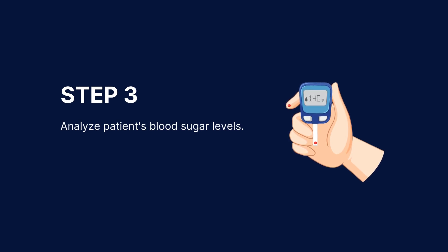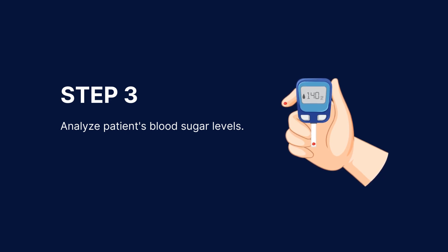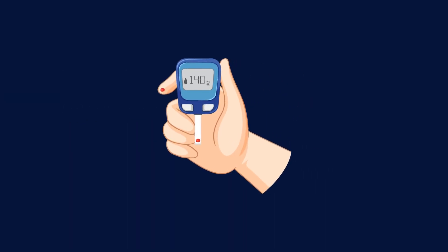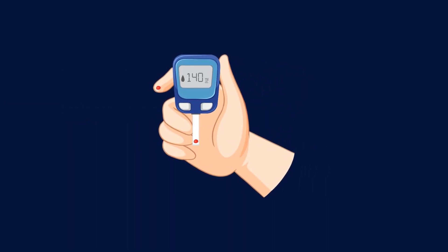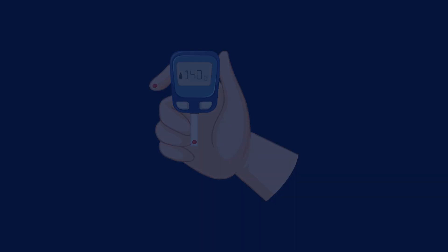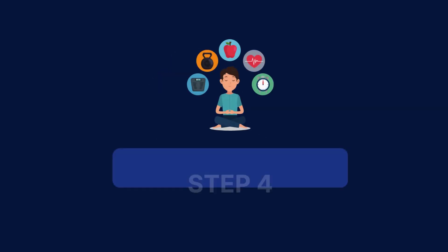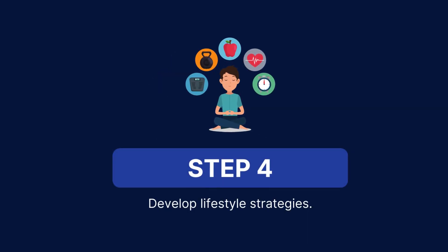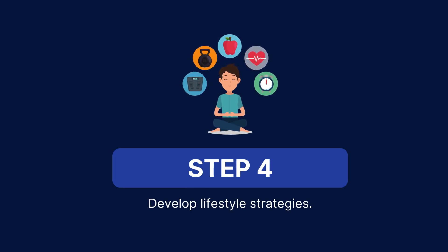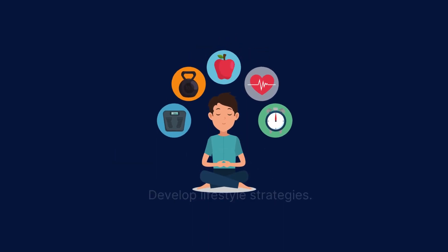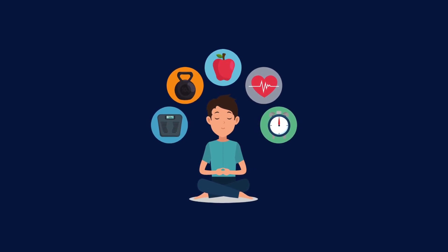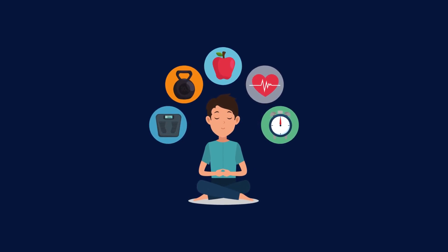Analyse the patient's blood sugar levels. Based on the A1c test — a 3-month average of blood sugar levels — and the answers to the questions you've asked your patients, determine your patient's blood sugar level. Develop lifestyle strategies to help your patient regulate their blood sugar levels: recommend they increase their physical activity, adjust what and how they eat, take medication if needed, and monitor blood glucose through regular testing.